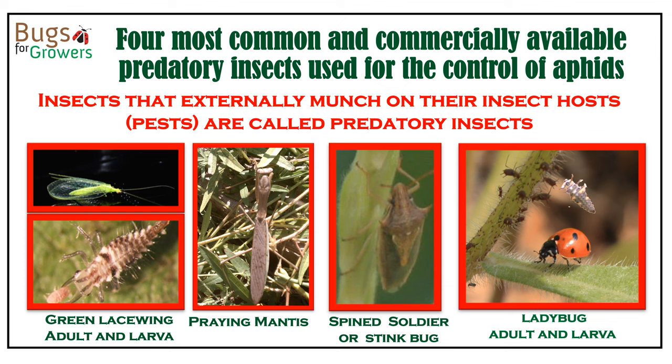We also learned the definition of predatory insects and the different types of predatory insects commonly found in nature and commercially available for the biological control of insect pests including aphids. Of these four predatory insects shown on this slide, we mainly learned about the identification and life cycle of predatory ladybugs and their use as a biological control of aphids.